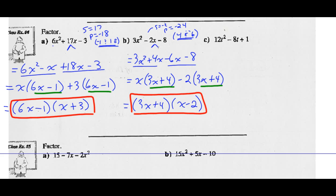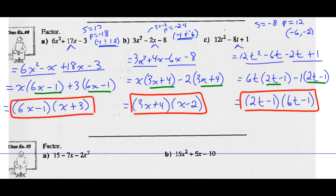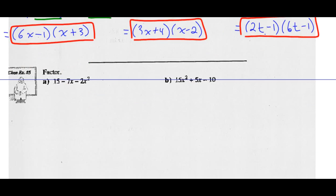Part C — pause and try it yourself, then restart to see the answer. What two numbers have a sum of negative 8 and a product of 12 times 1, which is 12? Those two numbers are negative 6 and negative 2. Decompose your middle term as negative 6T minus 2T. Factor by grouping: common factor of the first two terms is 6T, common factor of the last two terms is minus 1. Take out the common binomial factor of 2T minus 1, leaving 6T minus 1.